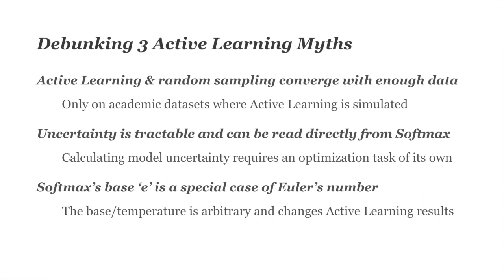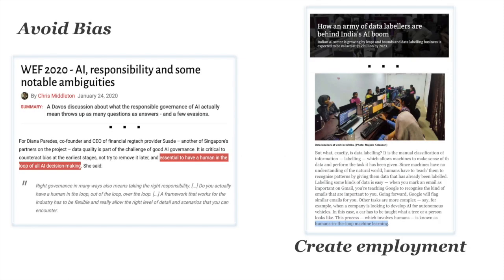While the second and third myths make active learning more complicated than many people assume, they also make it a more interesting problem. Before jumping into methods, I want to give an idea of how popular active learning and human-in-the-loop NLP is right now — I'll go through 10 examples and their benefits. First, avoiding bias: AI will have biases different from human biases, and having a human in the loop is one way to avoid both. It's also a way to create employment — by some measures, more people are labeling data for AI than creating algorithms.